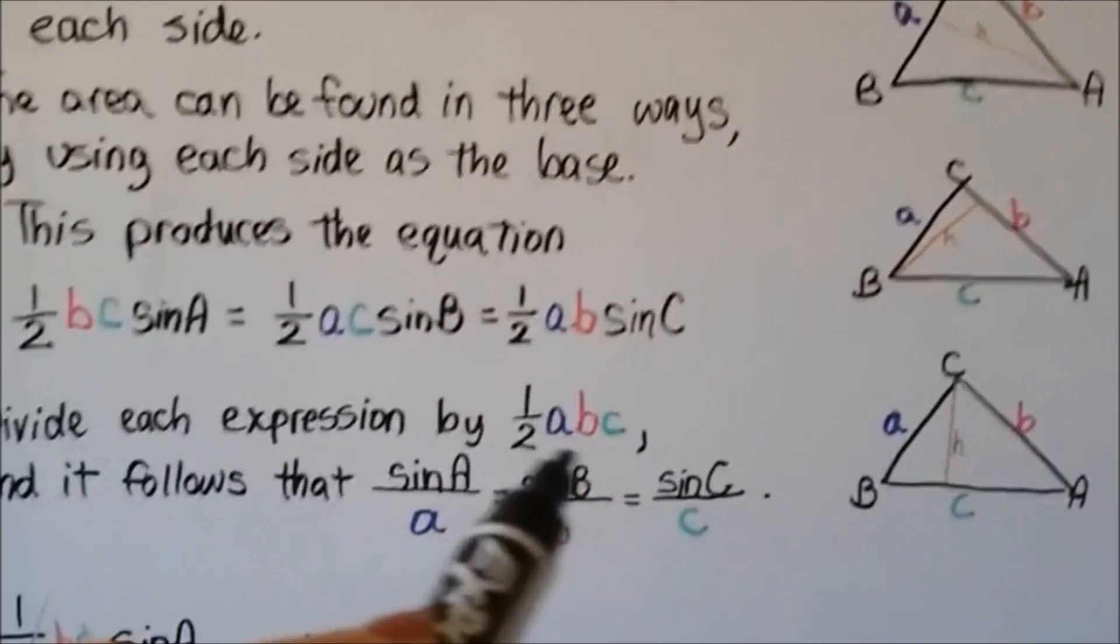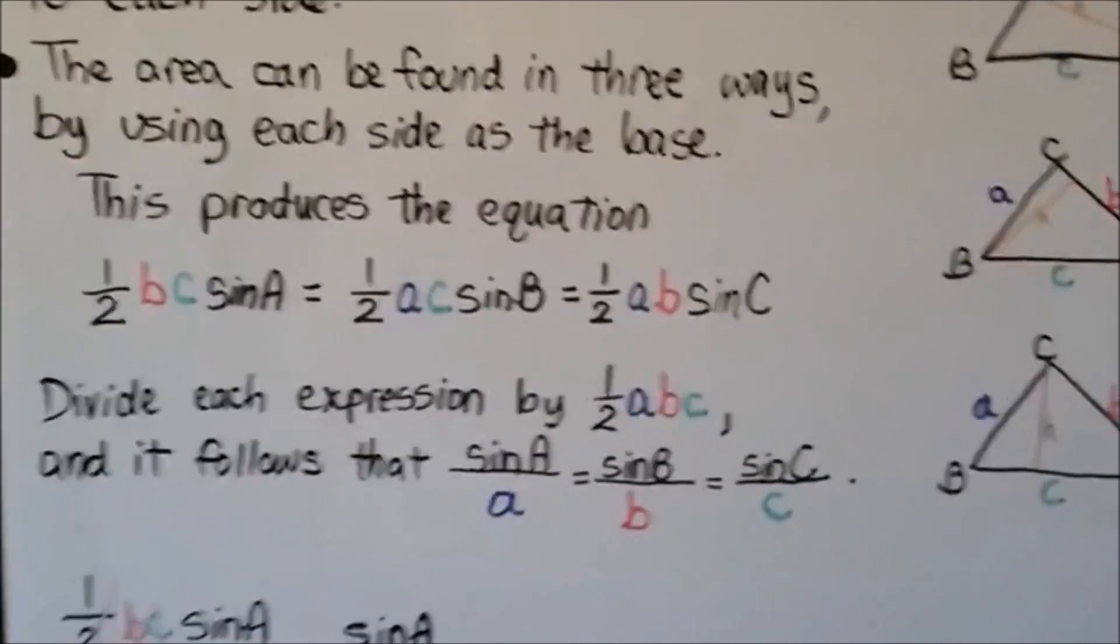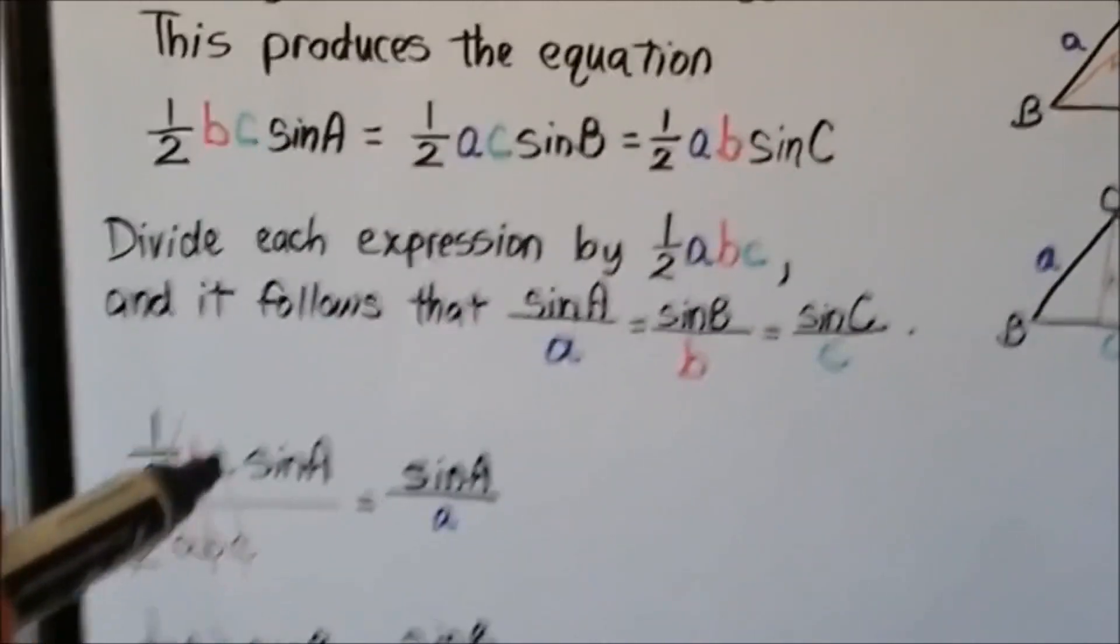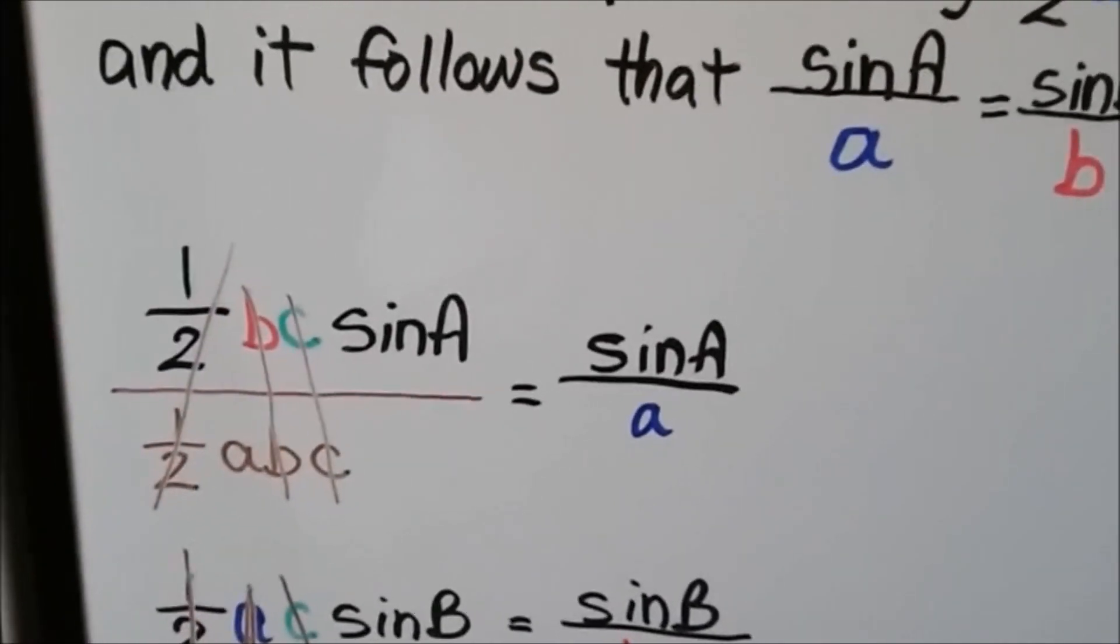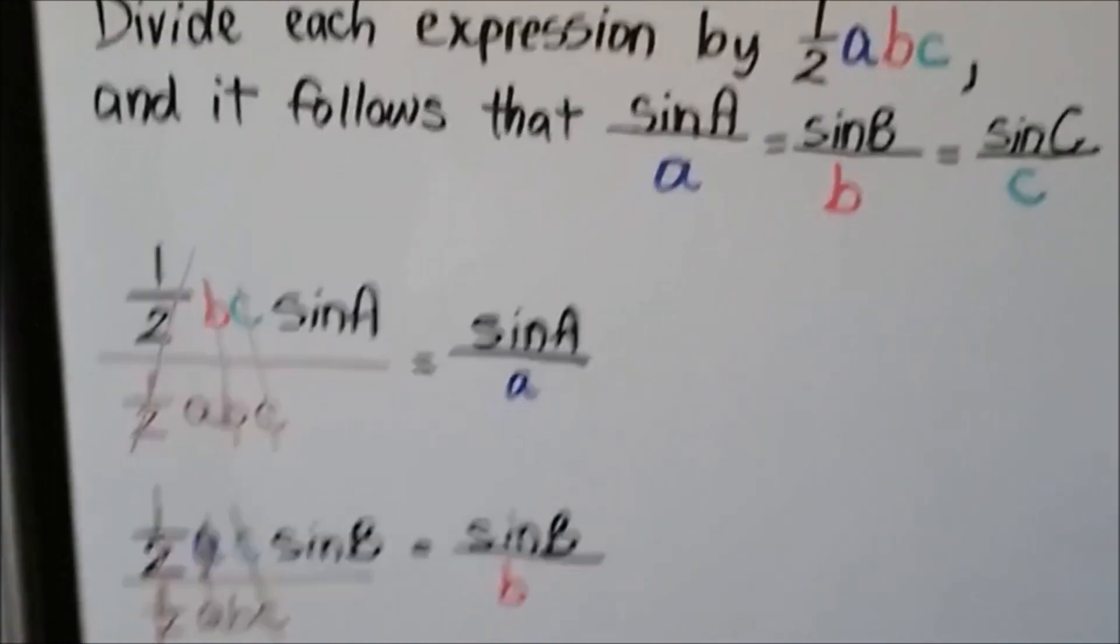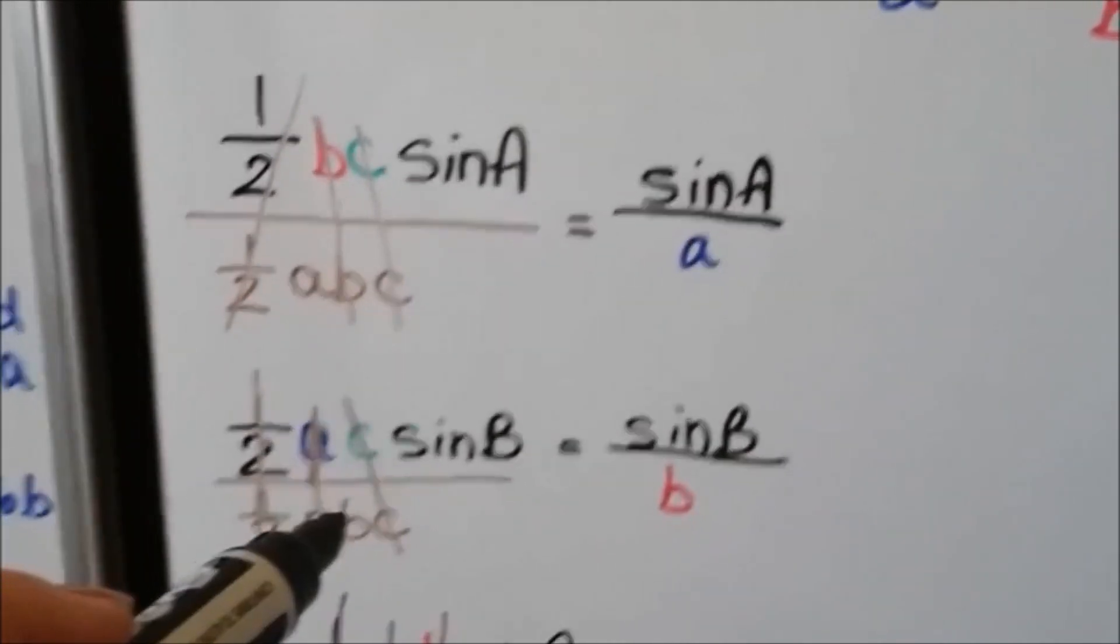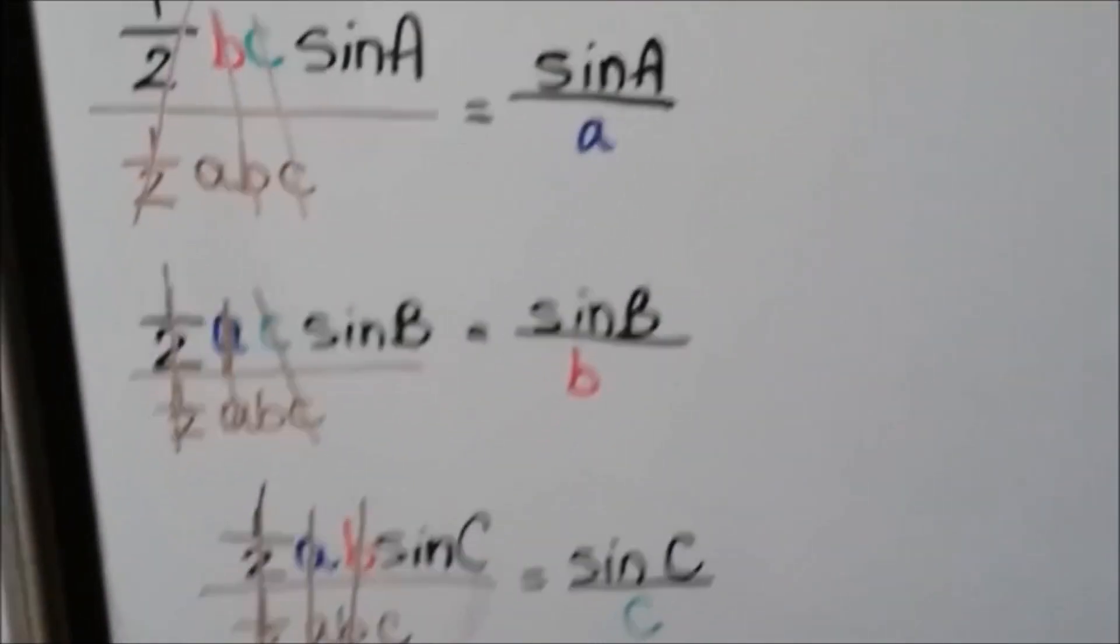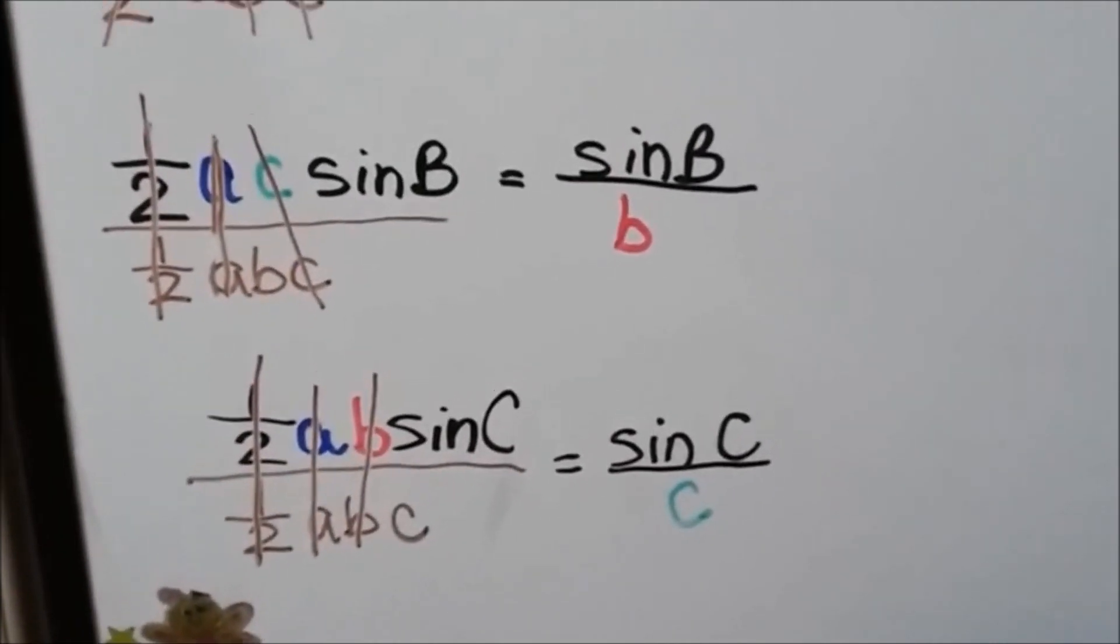It follows that sine of A over a equals sine of B over b equals sine of C over c, just like we did back in the beginning of the video. Here's what's happening. I'll break it down more. We're going to take this expression, half BC sine of A, and divide it by half ABC. What happens is, we cancel out the half, we cancel out the B, and we cancel out the C. We're left with sine of A over a. If we do it to this one, half AC sine of B, and divide it by half ABC, we cancel out the half, we cancel out the A, we cancel out the C, we're left with sine of B over b. When we do it to this one, half AB sine of C, and divide it by half ABC, we cancel out the half, the A, and the B, and we're left with sine of C over c.